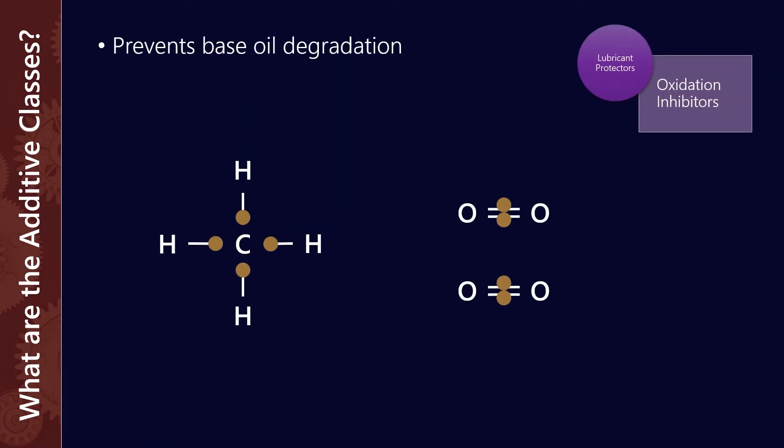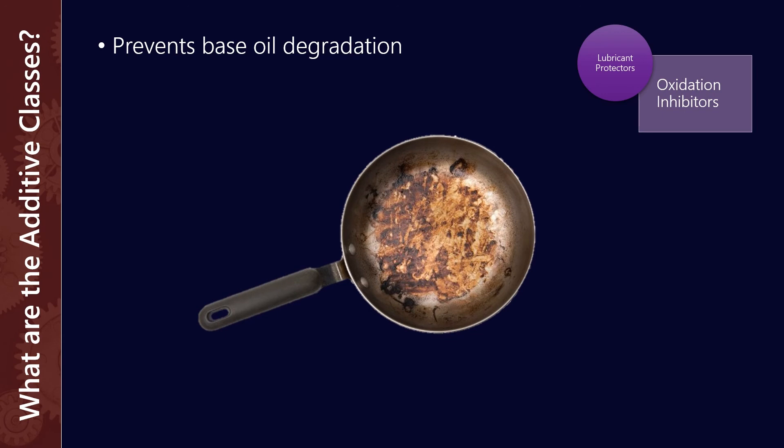Moving to lubricant protectors, we've got oxidation inhibitors. They're a whole class of typically aminic or phenolic additives that help prevent base oil degradation. What effectively happens is almost like—well, the most basic oxidation reaction of a hydrocarbon would be methane burning. Here I've got CH4 and some oxygen molecules, and what happens is there's an oxidation process that goes on, and that chemical exchange produces carbon dioxide and water.